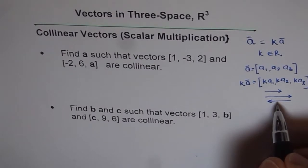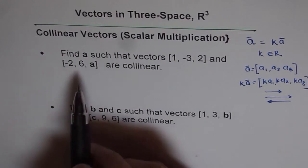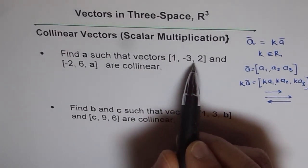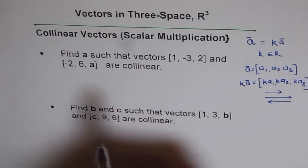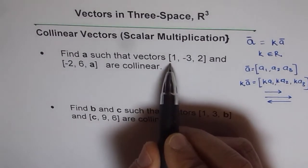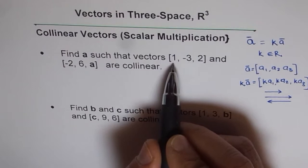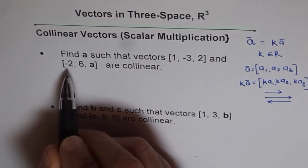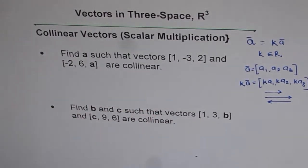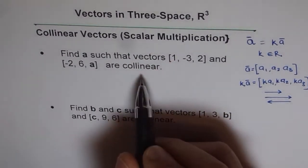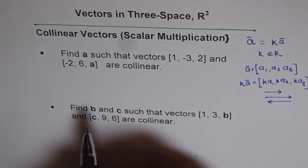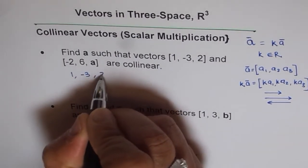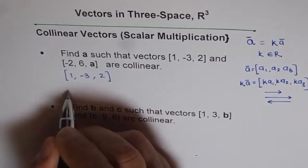This is the concept of collinear vectors — that they are scalar multiples — which we are going to use to solve our questions. Question number one: find a such that the vectors [1, -3, 2] and [-2, 6, a] are collinear. For the first vector, the direction numbers are 1, -3, 2, and for the second, the direction numbers are -2, 6, and a.